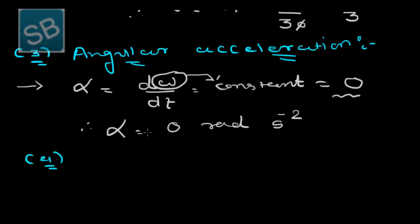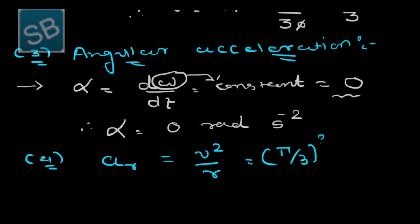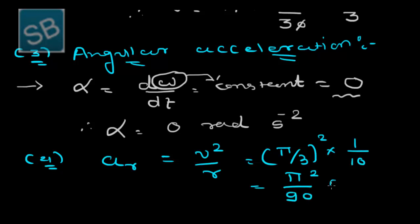The fourth quantity is the radial acceleration, aᵣ, which equals v²/r — the centripetal acceleration. So aᵣ equals (π/3)² times (1/10), giving π²/9 centimetres per second squared.